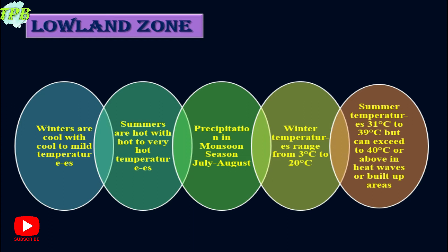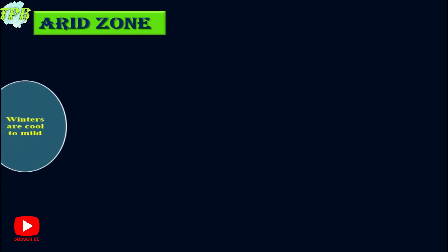Temperatures in the lowland zone can exceed 40 degrees Celsius or above during heat waves or in built-up cities like Lahore or Faisalabad.